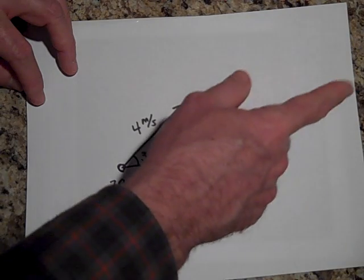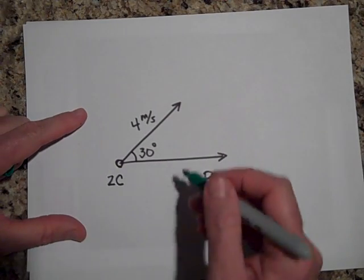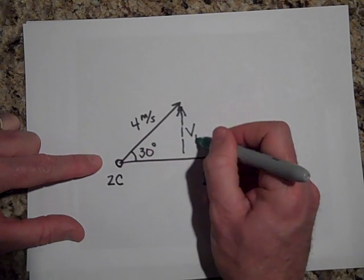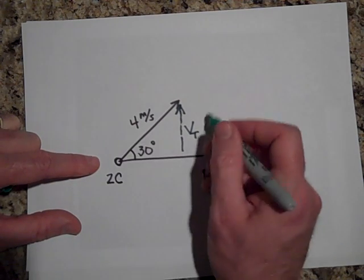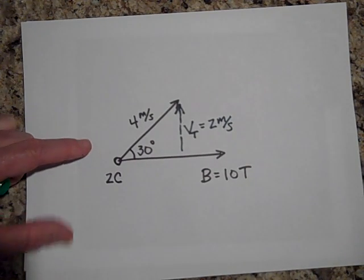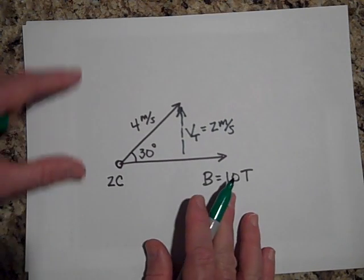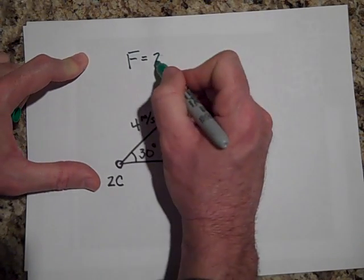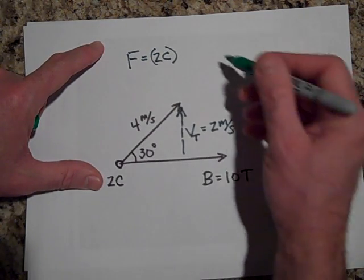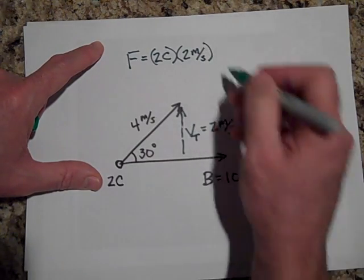Just how much force will be on this? The only part of v you want to take is the part perpendicular to b. Doing a little trigonometry: if this angle is 30 degrees and the speed is four meters per second, then the perpendicular component is two meters per second, because it's opposite the 30-degree angle and sine of 30 is one half. So the force is q times v-perpendicular times B: two coulombs times two meters per second times ten teslas.